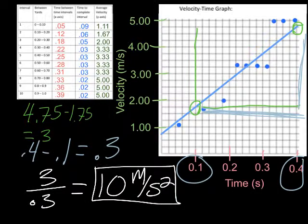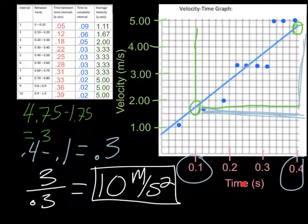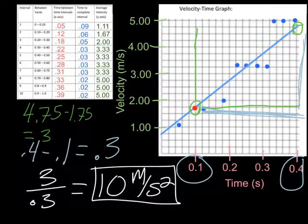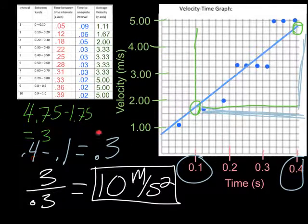Make sure you show your slope calculation, your chosen points, your data table, and the labeling and scaling of both axes. Draw your data points, draw your best-fit straight line, indicate your starting and finishing points, show your rise and run calculations, and then your slope calculation. Then turn it in and you're done — good luck!